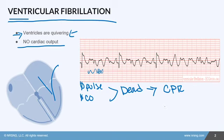This rhythm is very common in patients who are having a heart attack or have severe coronary artery disease. If left untreated, after a while you will just see asystole. Let's talk about the characteristics of V-fib.